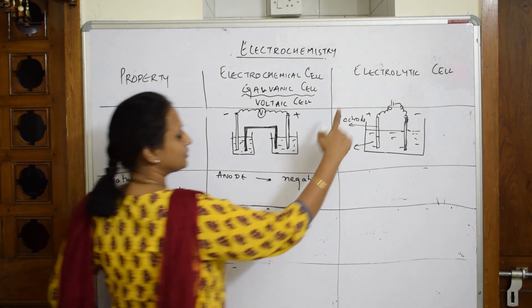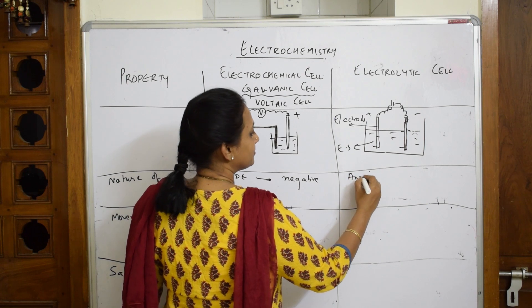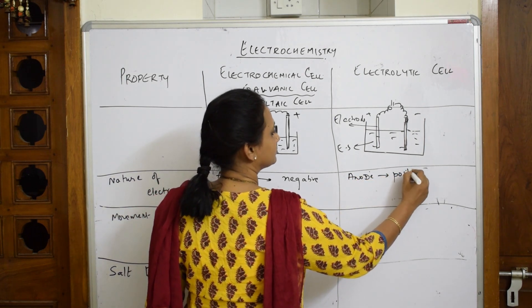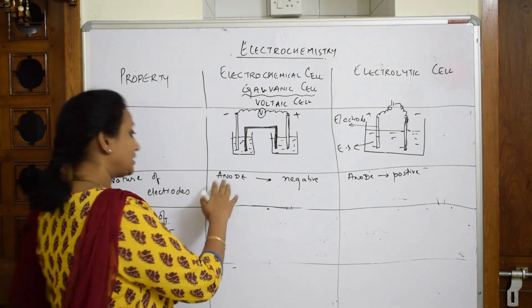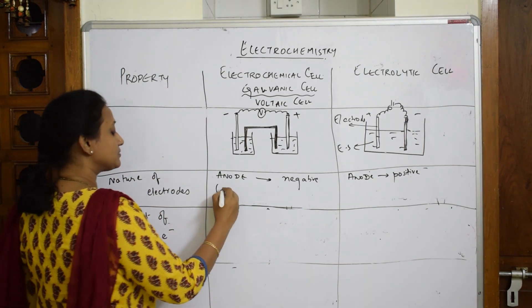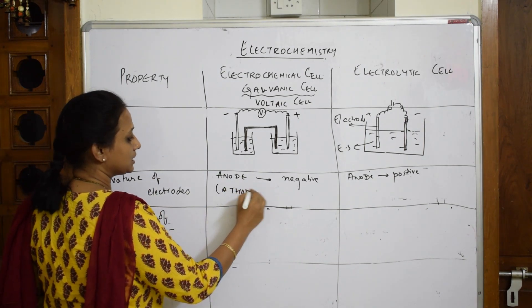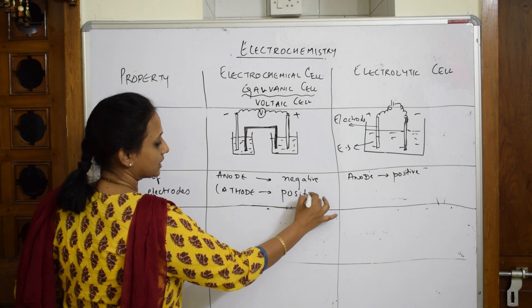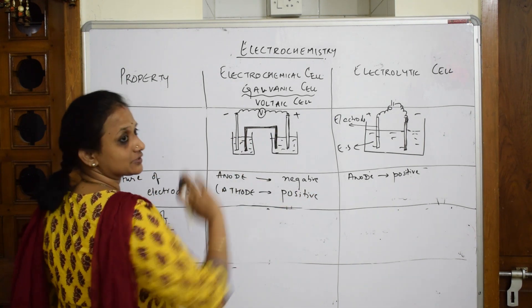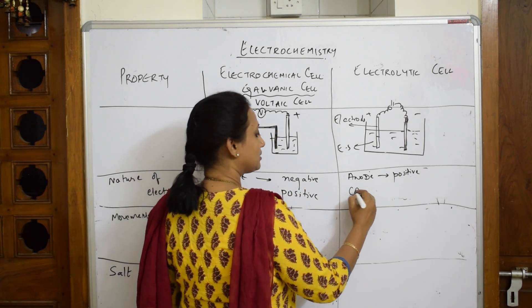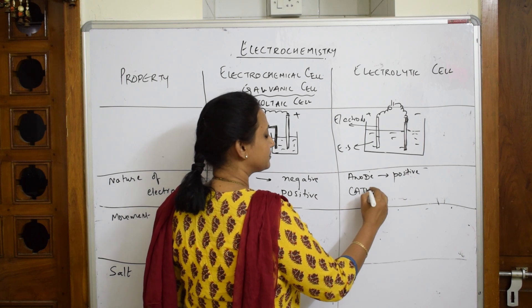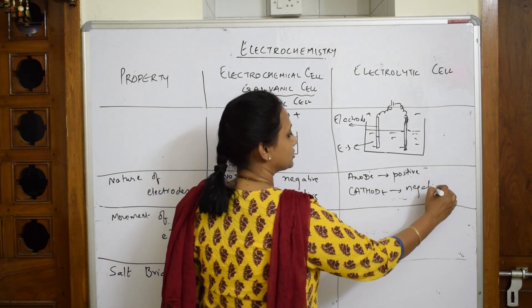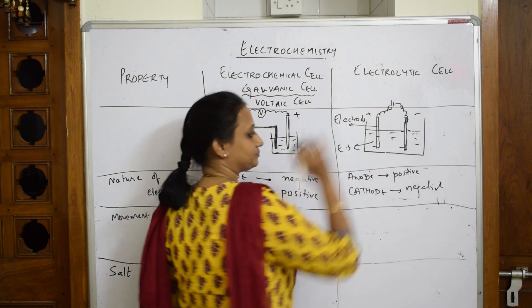In electrochemical cells, because the anode is negative, the cathode is automatically positive. In electrolytic cells, it is the reverse — the anode is positive and the cathode is negative. Remember: negative anode and positive cathode for electrochemical cells; positive anode and negative cathode for electrolytic cells.